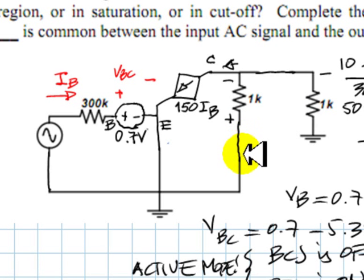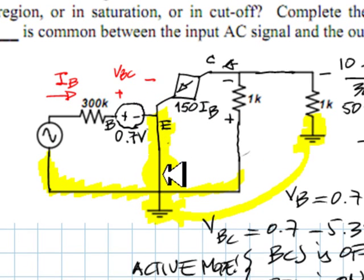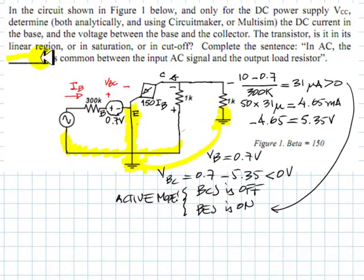Here we observe that what is common between the input source and the output load through the reference node is the emitter. This is a common emitter connection. That is what is common, and with that, we complete this question.